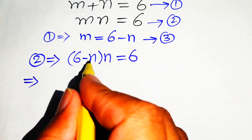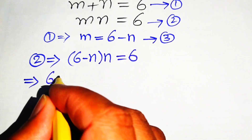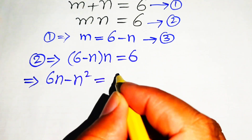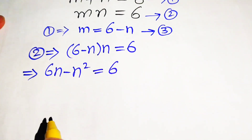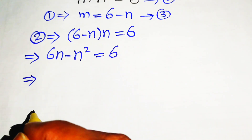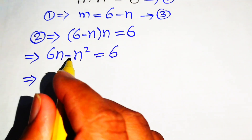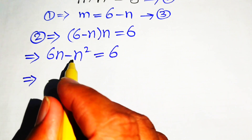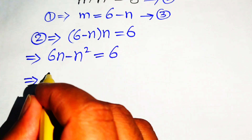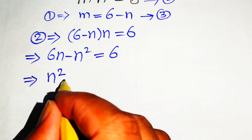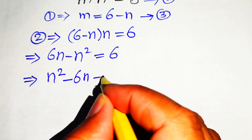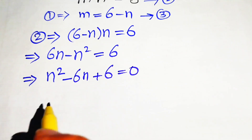Expanding, we multiply n into both terms and obtain 6n minus n squared equals 6. Rearranging into standard quadratic form, we move the terms to the right-hand side: negative n squared becomes positive n squared, the 6n becomes minus 6n, giving us n squared minus 6n plus 6 equals 0.